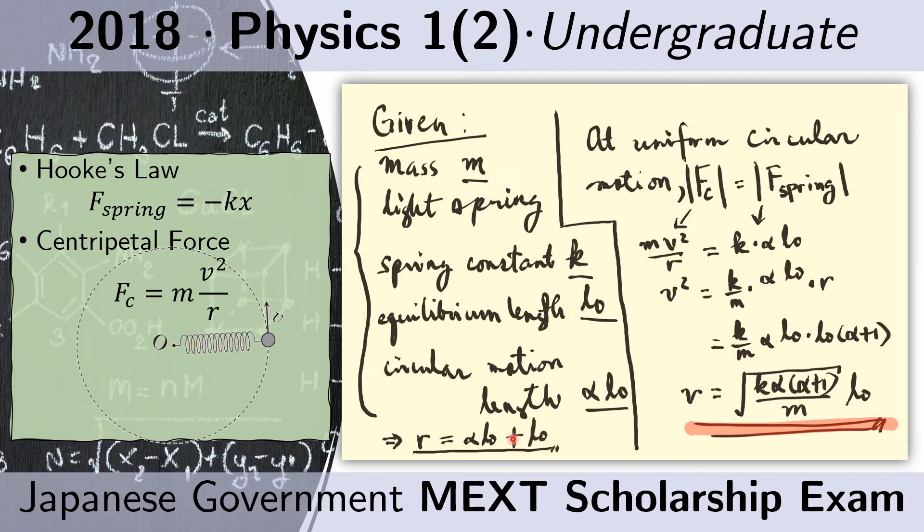In other words, the total length of the spring when it is in motion is L sub 0, which is its original length, plus alpha times L sub 0, which is the amount of elongation of the spring when it's moving in a uniform circular motion.